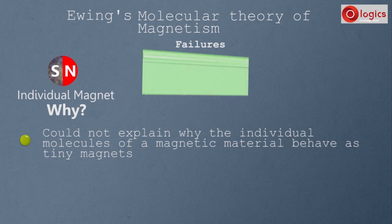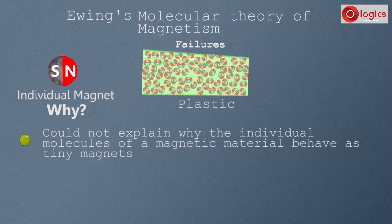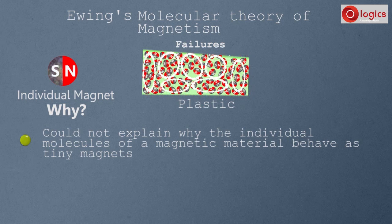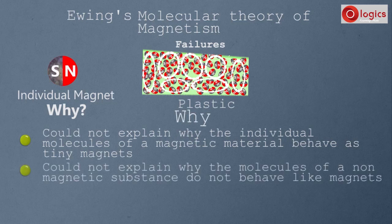For a non-magnetic substance like plastic, it never becomes a magnet due to the closed chain arrangement of molecules. To become a magnet, molecules should be in straight chains, so the behavior of molecules in a non-magnetic substance is different from those in a magnet. But Ewing's molecular theory could not explain why the molecules of a non-magnetic substance do not behave like magnets.